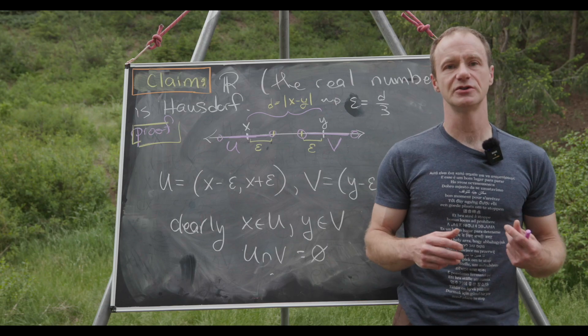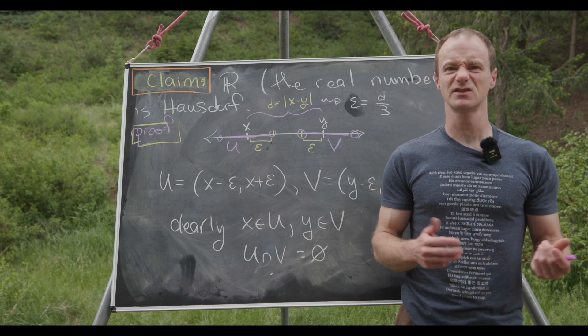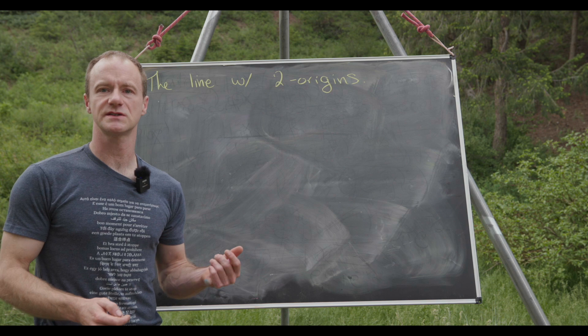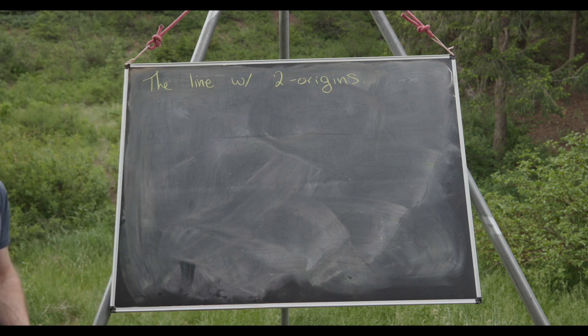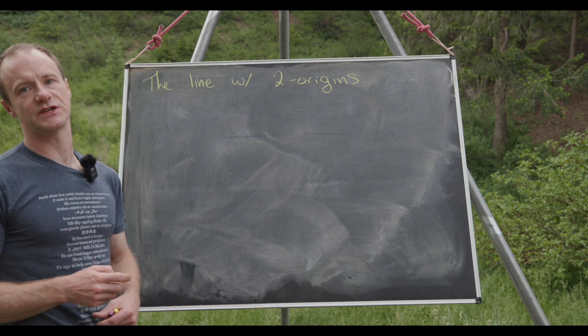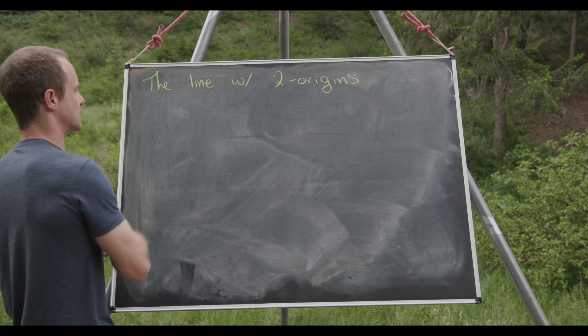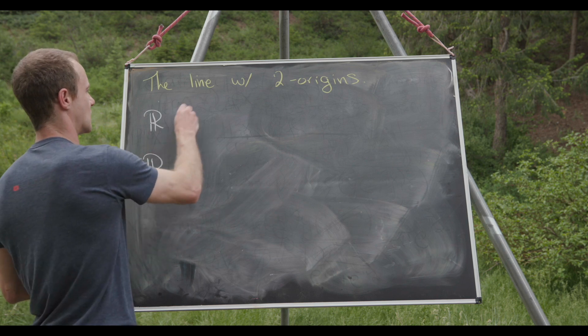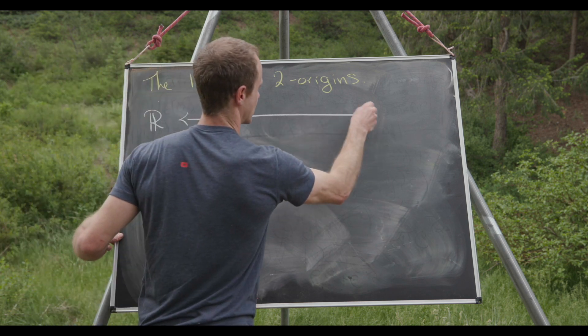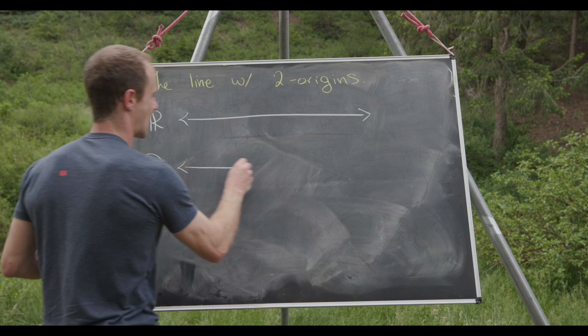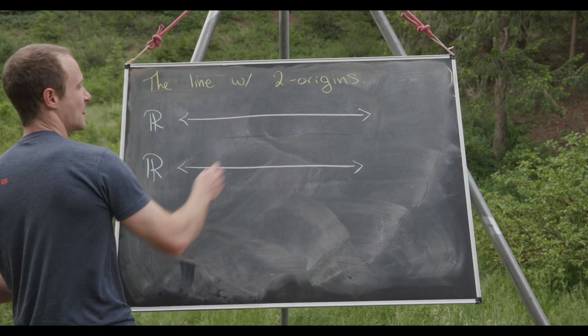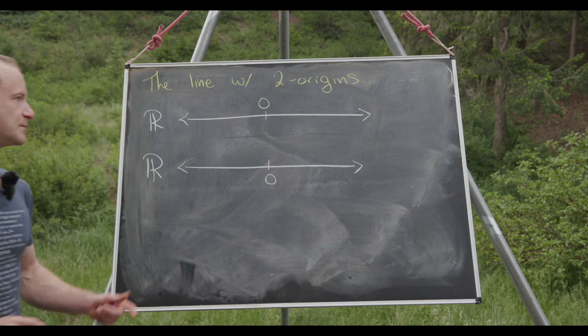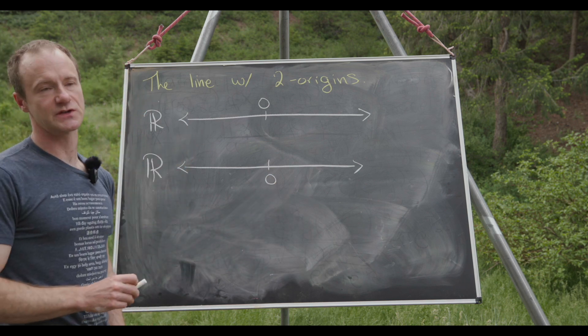Okay, so now that we've got some intuition built as well as some examples, let's look at a classic non-example. For our classic non-example we're going to look at something called the line with two origins. There's a little bit of work to construct this but I think it's not so hard to follow. So let's take two copies of R. So here's R and here's R. This is our real numbers and this is our real numbers. And then here we'll put zero here and zero here. So we've got the origin in each of those copies of R.